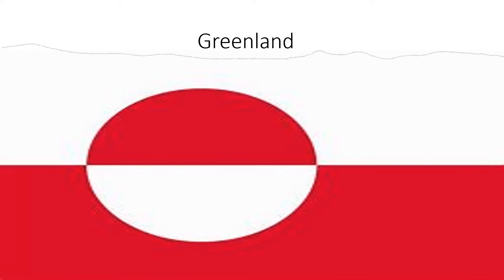Greenland: white and red above each other, and in the middle side of the flag there is a circle that has red and white.